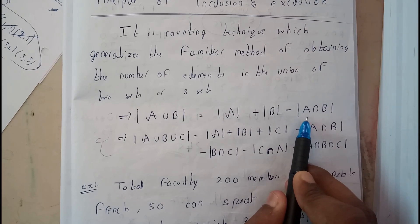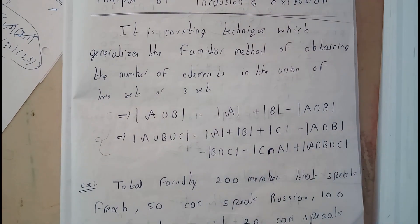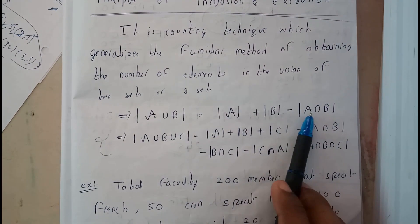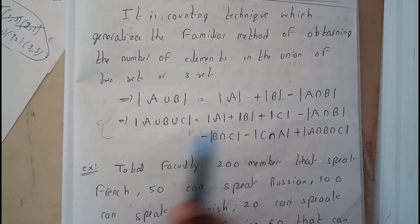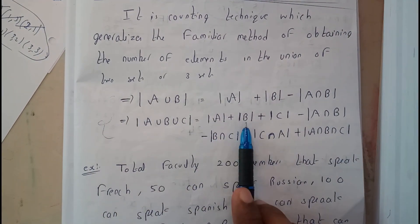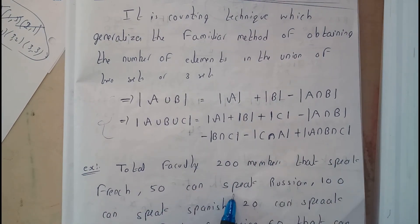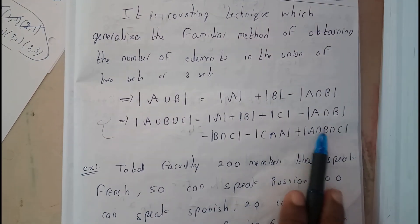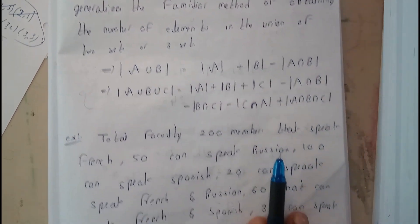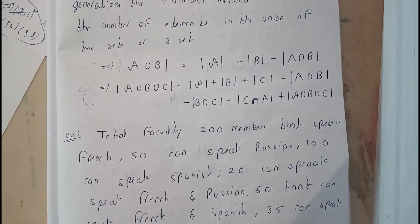Whenever it comes to union, you will be adding the individualities, subtracting the double intersection, and adding the triple intersection. That's it. There is nothing much to verify or something like that.